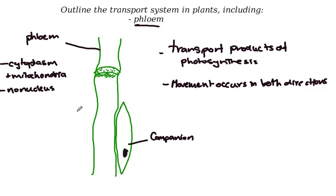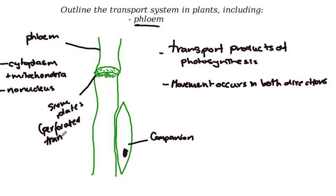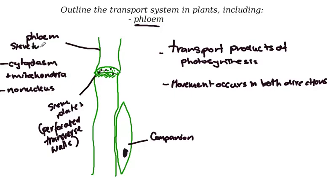The phloem tissue is what we call sieve tube elements. The reason for that name is because they have sieve plates, which are perforated transverse walls. Unlike the xylem tissue where it's continuous, the phloem tissue has these perforations, and these perforations allow materials to move from one part of the sieve tube element into another part.